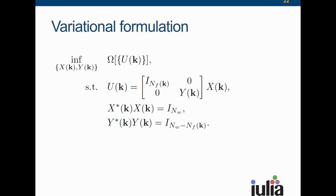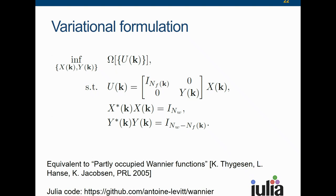When you look at the variational formulation, it looks very much like the Marzari-Vanderbilt recipe. You still minimize the spread, but instead of minimizing U, you minimize X and Y independently. I want to say this is a redundant representation, which means it is more difficult to minimize than the original problem. But you put this Ansatz in, require X and Y to be unitary matrices, and minimize.